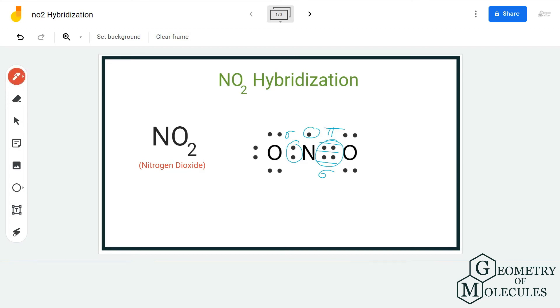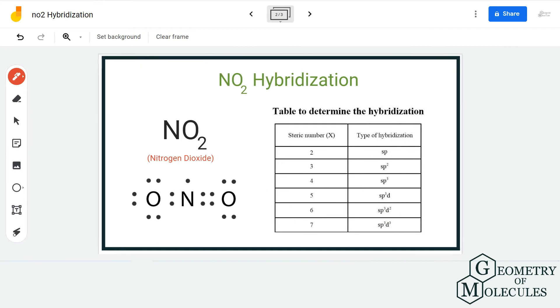As mentioned previously, we are just going to consider the sigma bonds, and hence there will be two bonding pairs of electrons. We will also consider this one electron which is not forming any bonds. Considering that, we have the steric number three.